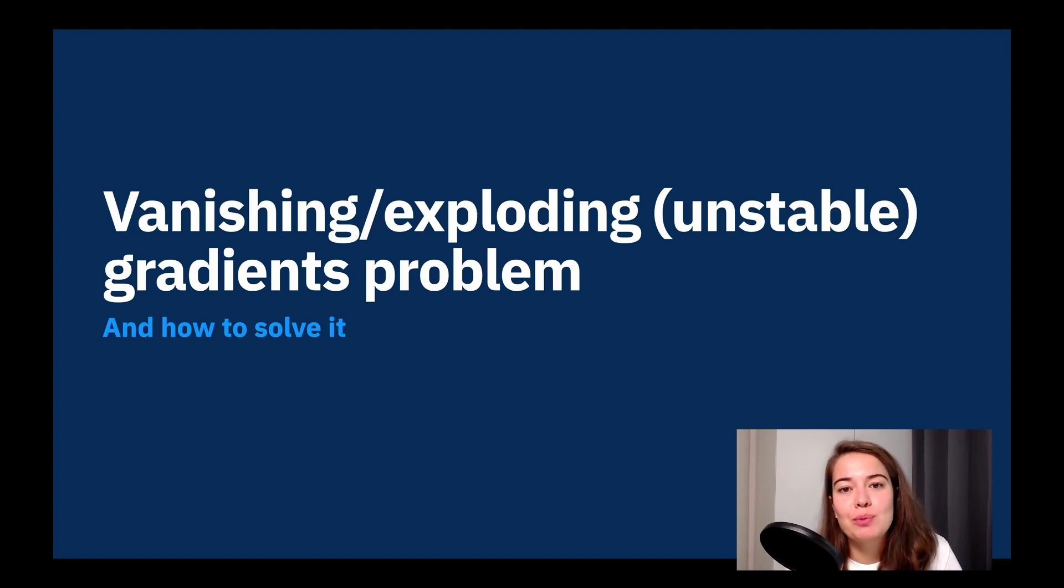All right, so next problem we have to deal with when it comes to deep learning is the vanishing or exploding gradients problem. You will see in some places that these are mentioned as unstable gradients problem or unstable gradient problem. They basically mean the same thing.